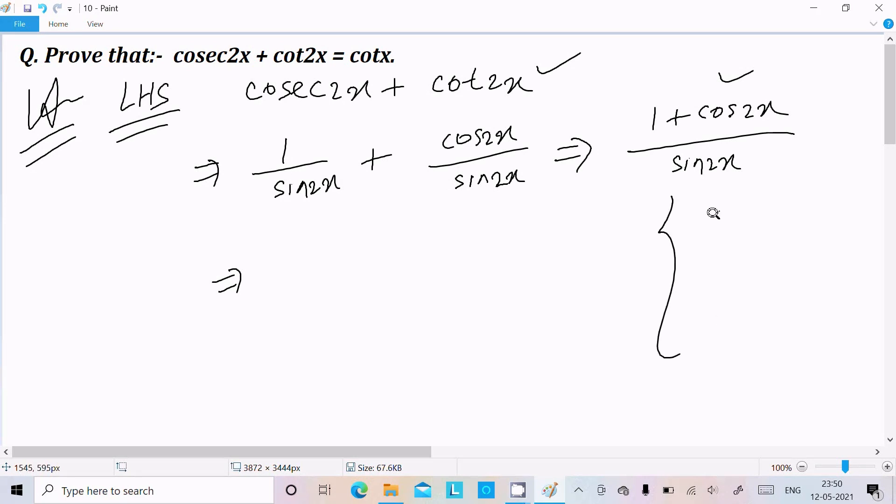So there are different formulas for cos 2x. So here cos 2x equals cos squared x minus 1, or we can write 1 minus 2 sin squared x, or we can write cos squared x minus sin squared x. So you need to select this one because in the numerator we need to get cos.